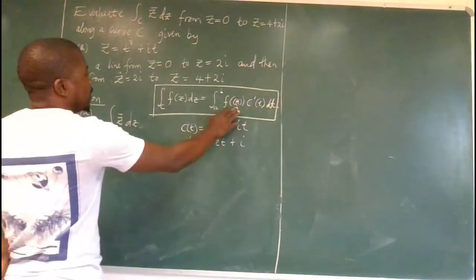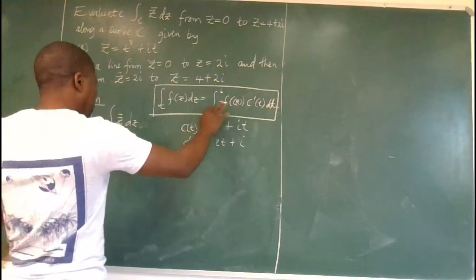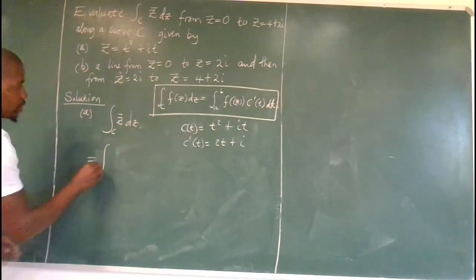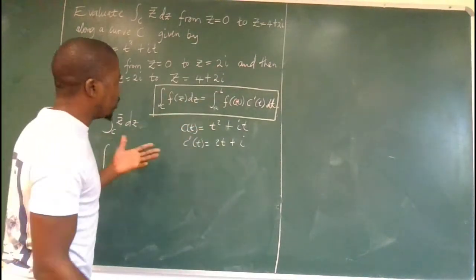And now we will write everything into this formula. So this integral is equal to the integral from, so we need to determine a and b, which is pretty easy.